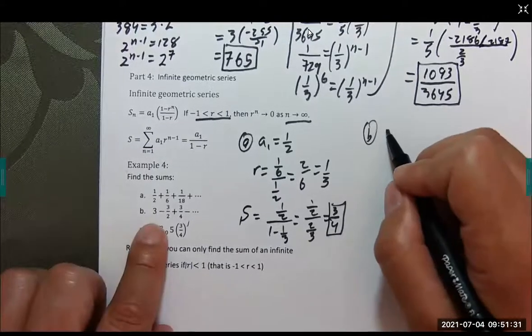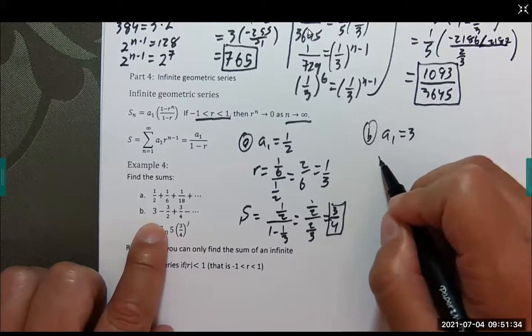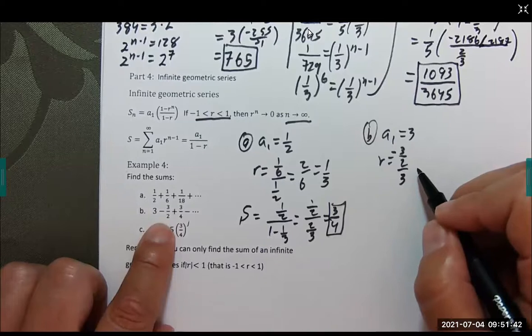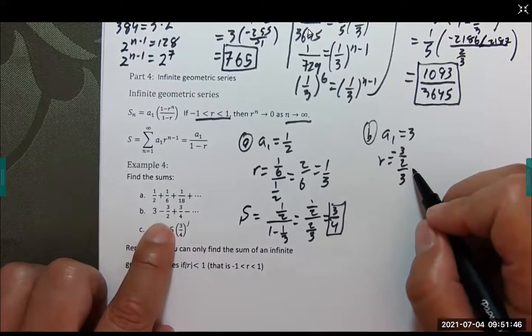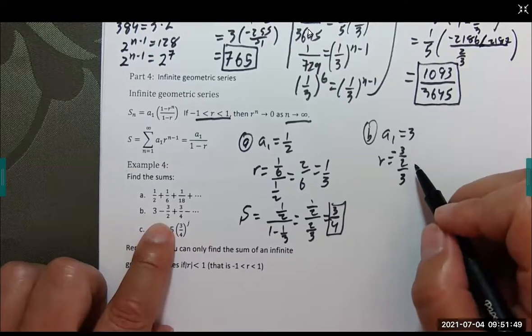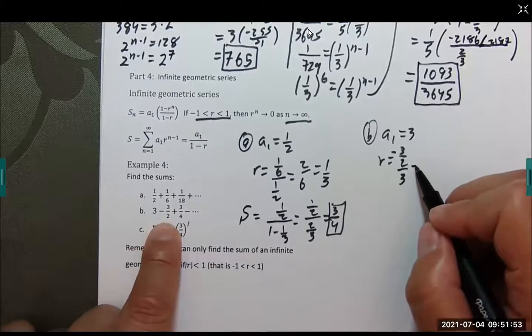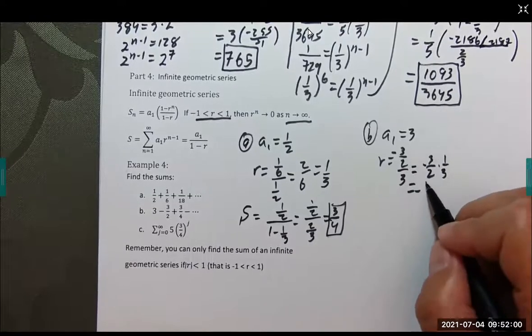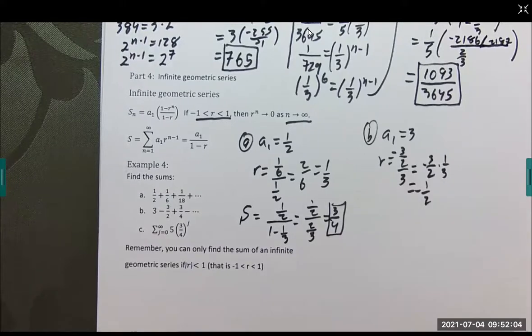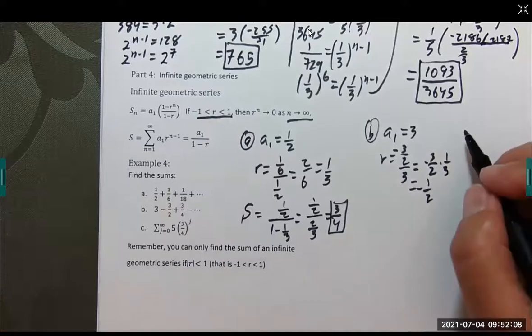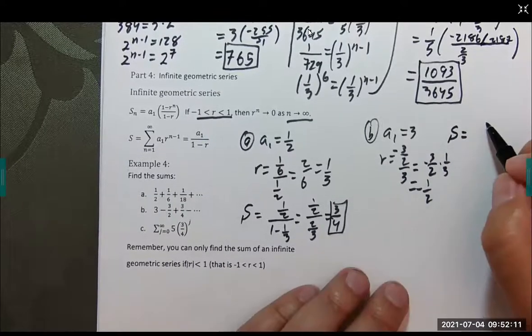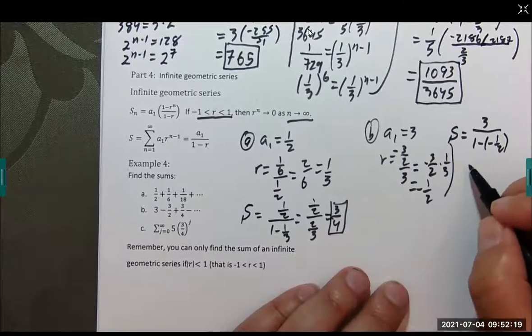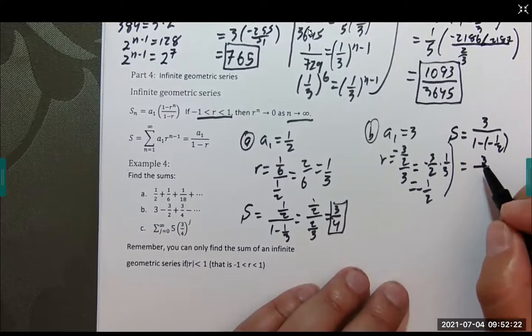Let's try B. A sub 1 is 3. R is negative 3/2 over 3, which gives us negative 3/2 times 1/3, or negative 1/2 for R, which is between negative 1 and 1. That means we have a sum. This gives us 3 over 1 minus negative 1/2. Be careful with that double negative. Equals 3 over 1 plus 1/2, which is 3/2, which equals 2.